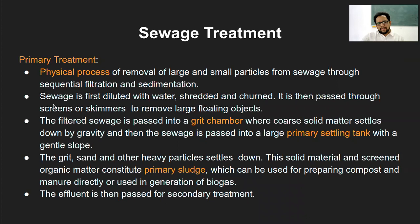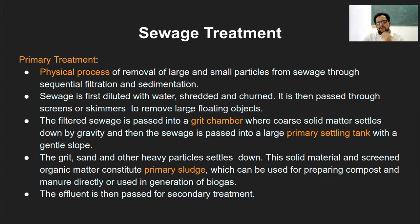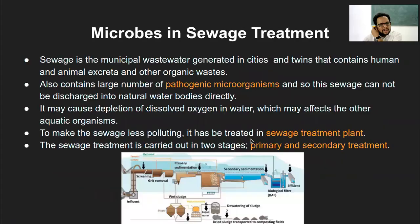The first step is the sewage is diluted with water, shredded, and churned, then passed through screens or skimmers to remove large floating objects and maximum possible solid particles. The filtered sewage is then passed through the grit chamber - grit refers to the solid mass left behind after the first filtration unit. In the grit chamber, coarse solid matter settles down by gravity, and then the sewage is passed into the large primary settling tank.